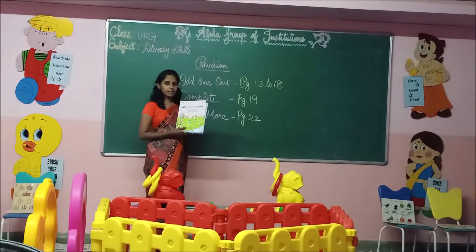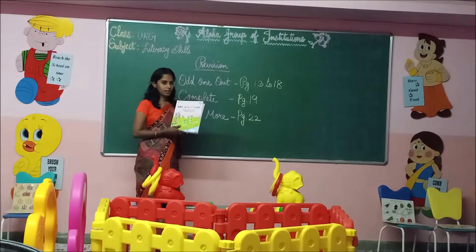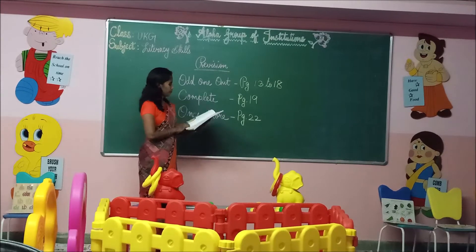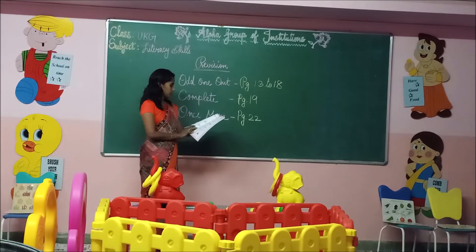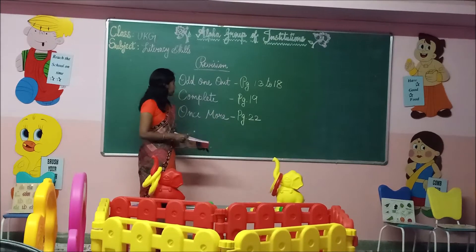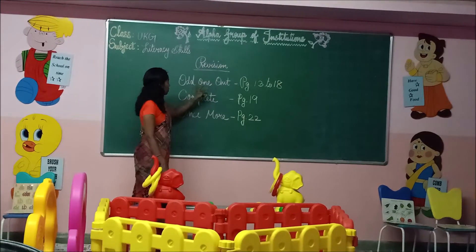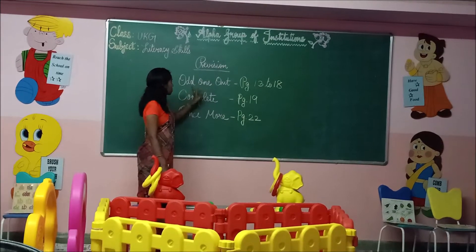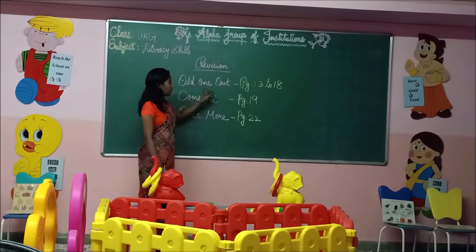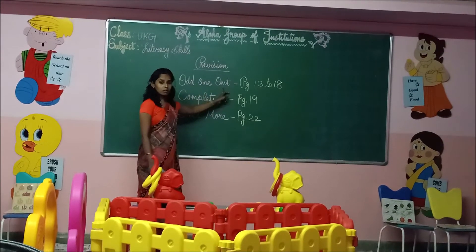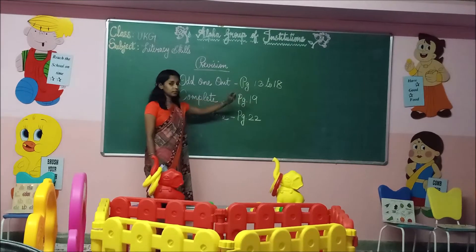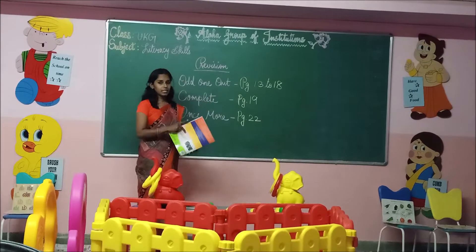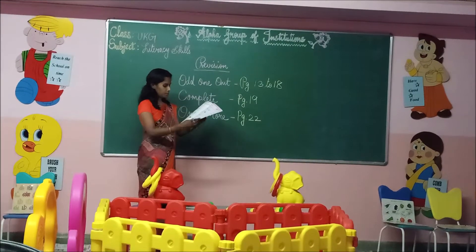Take your literacy skills in your KG textbook and we shall move on to that portion. The first topic is 'one out,' covering page number 13 to 18.